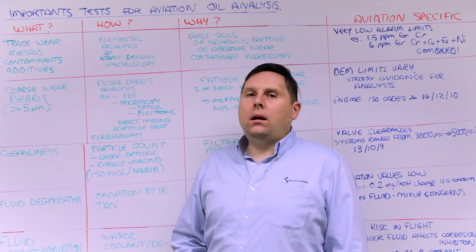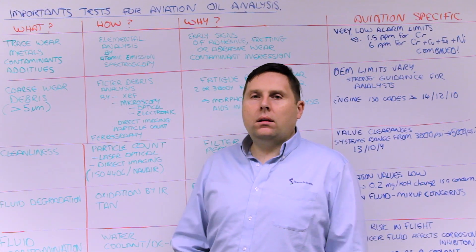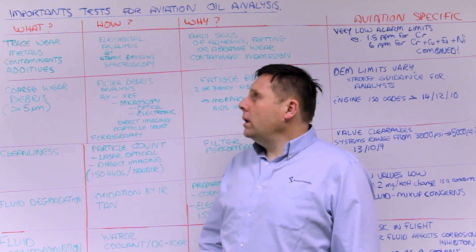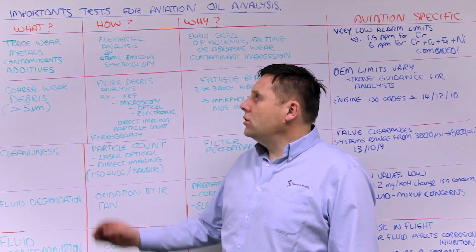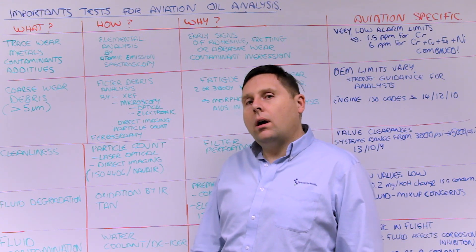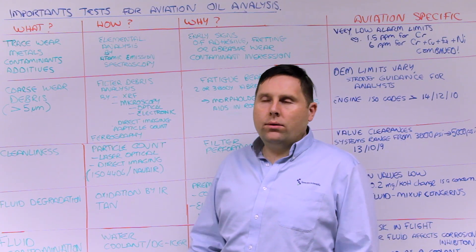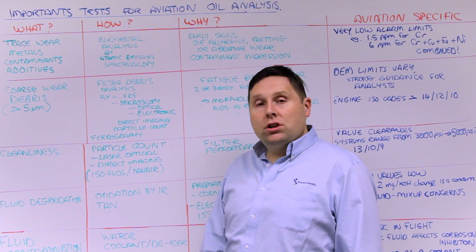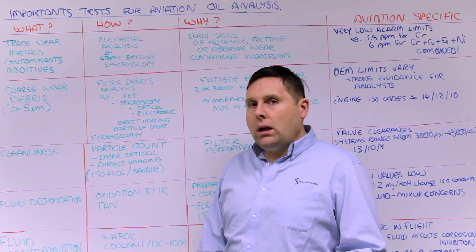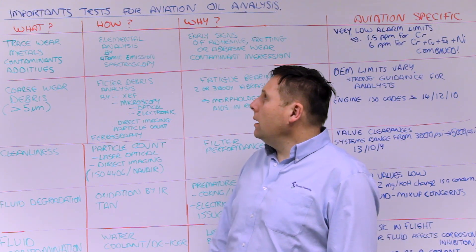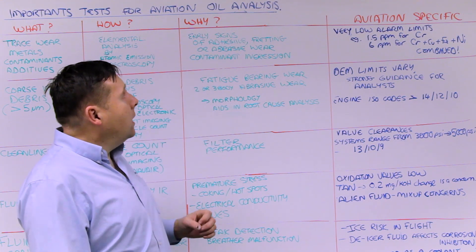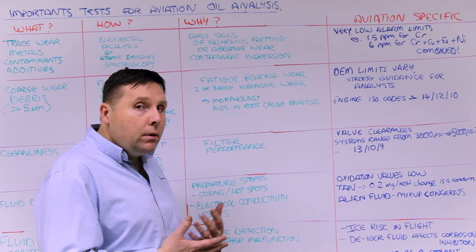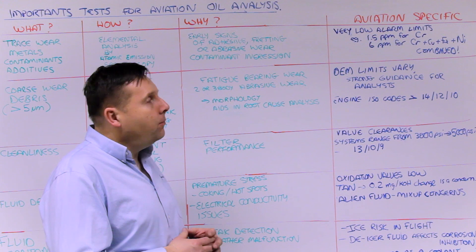What are the important tests in aviation oil analysis? One key thing we want to look for is trace wear metals, contaminants, and additives — these are tested throughout the entire industry. It's done by elemental analysis using atomic emission spectroscopy, such as RDE or ICP. This is important because it looks for early signs of adhesive, fretting, or abrasive wear, contaminant ingression, and can also assess the additive package in the oil.